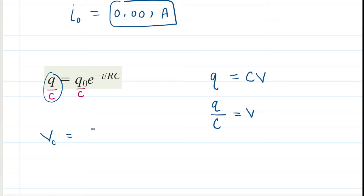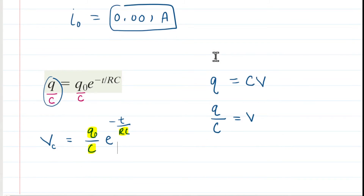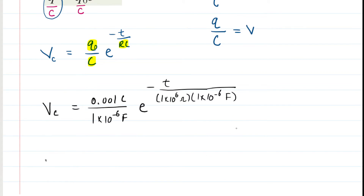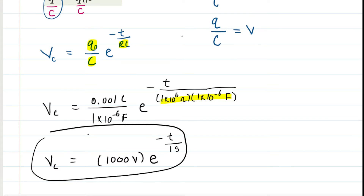We have q₀ over C multiplied by e to the negative t divided by RC. Plugging in values: initial charge is 0.001 coulombs, capacitance is 1 microfarad, and RC equals 1 second. Dividing the leading coefficient gives 1,000 volts, and RC simplifies to 1 second. So V_C equals 1,000 volts times e to the negative t over 1 second. That's the answer for Part C.